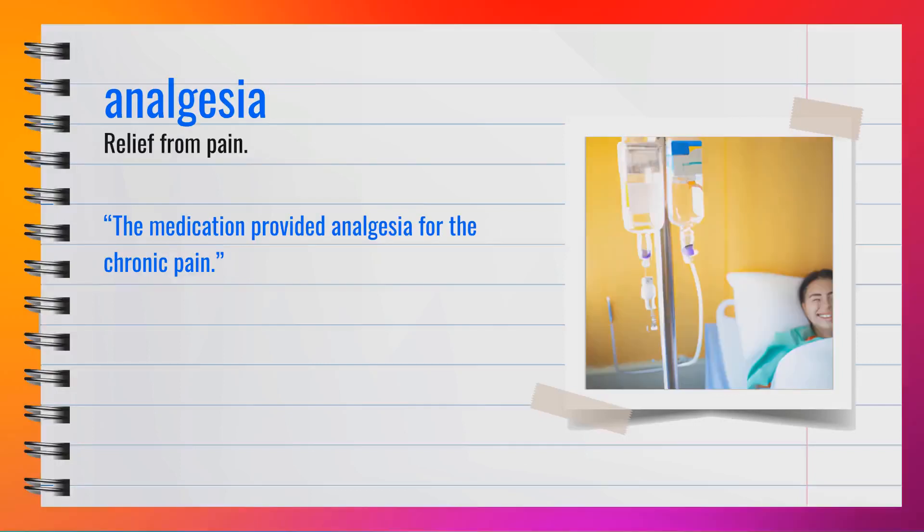The word analgesia, spelled A-N-A-L-G-E-S-I-A, is a noun. Synonyms include pain relief and painkiller effect. For example, the medication provided analgesia for the chronic pain. In summary, analgesia means relief from pain.